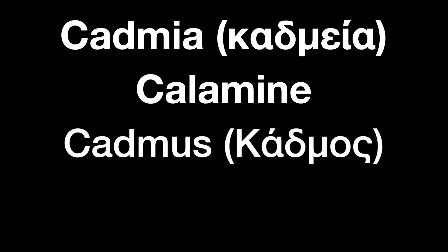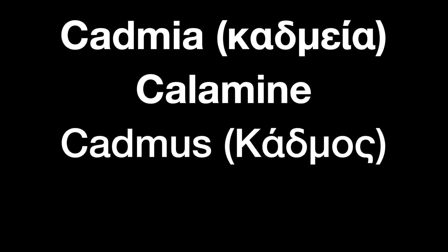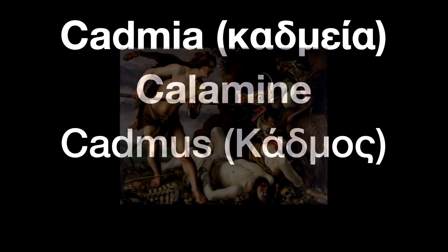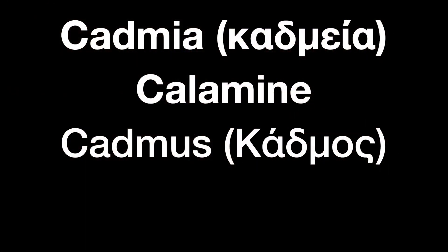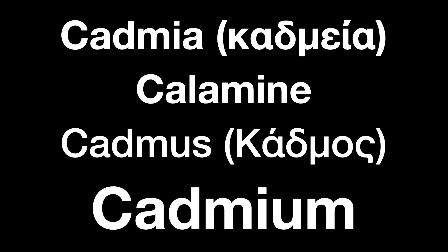Cadmium comes from the Latin or Greek word meaning calamine, which was named after the Greek character Cadmus — the mythological founder and first king of Thebes — whom we see here fighting a dragon in a painting by Hendrik Goltzius. From this rich history, we get the name of the element cadmium.